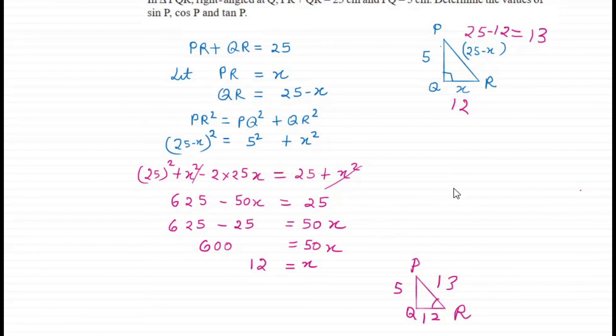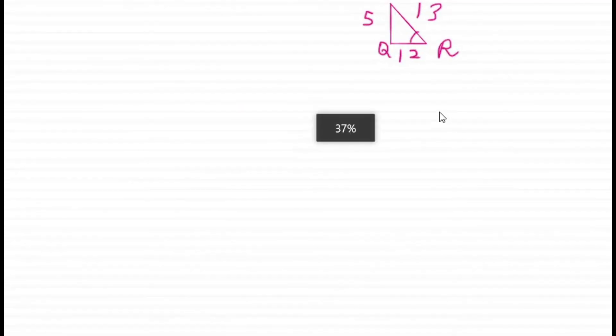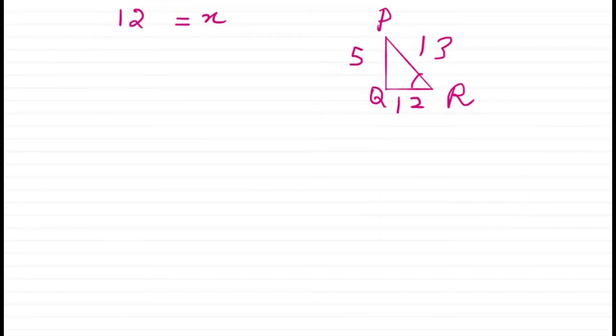Now we have to find sin P, cos P, and tan P. Sin P is opposite side divided by hypotenuse, so the opposite side is 12 and the hypotenuse is 13, giving 12/13. For cos P, the formula is adjacent side divided by hypotenuse, so that's 5/13.